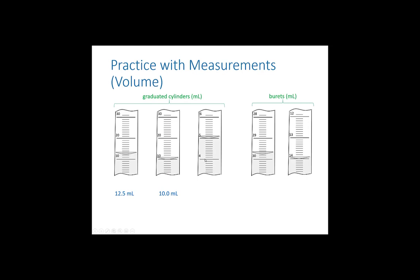The third graduated cylinder — similar to our 10 mL lab cylinder — has markings at 4, 4.1, 4.2, 4.3, counting by tenths. Since the smallest markings are tenths, we go to the hundredths. The reading appears right on the 5 line, so the correct answer is 5.00 mL. If you skip identifying the smallest markings, you might incorrectly write 5.0 or just 5 — the decimal place is critical.